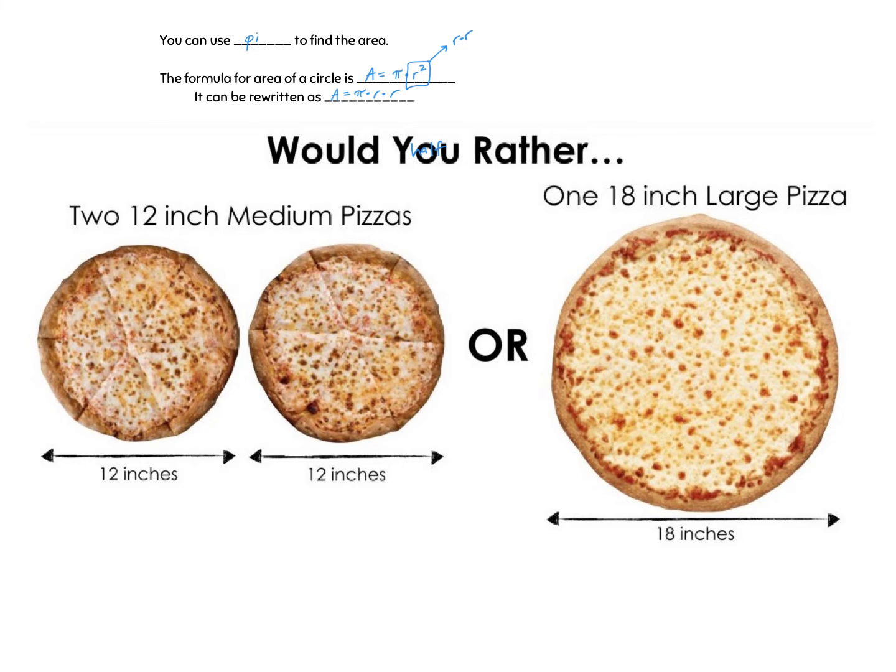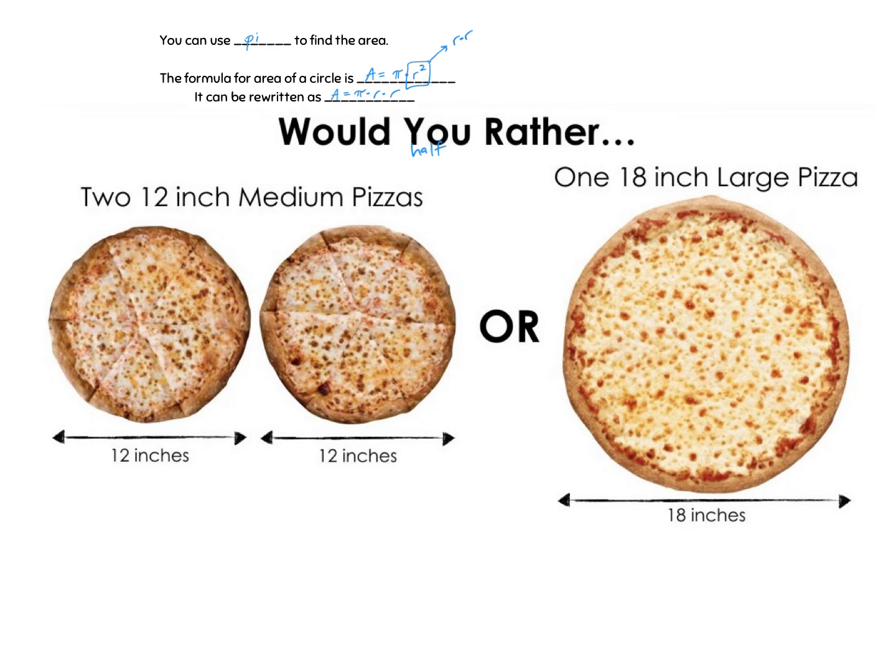So in this case which one would make more sense? If we look at the two medium pizzas we can see that their diameters are each 12. So that means their radius is 6. So radius is 6. For the bigger pizza the radius is actually going to be 9. Okay half of 18 is 9 half of 12 is 6.